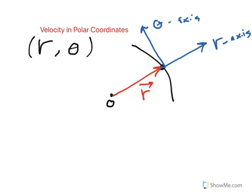We can now define unit vectors along the radial and transverse axes. A unit vector along the radial axis is typically denoted U sub R, and a unit vector along the transverse axis is denoted U sub theta. Remember that unit vectors have a magnitude of one. U sub R points in the radial direction, and U sub theta points in the transverse direction.